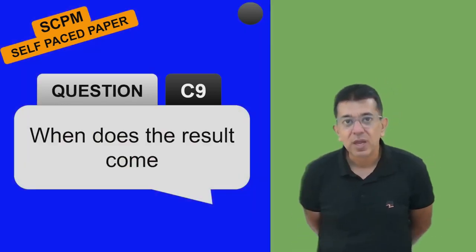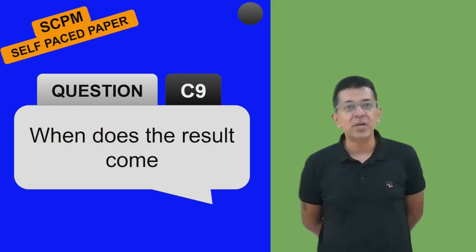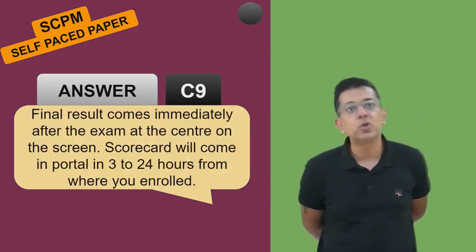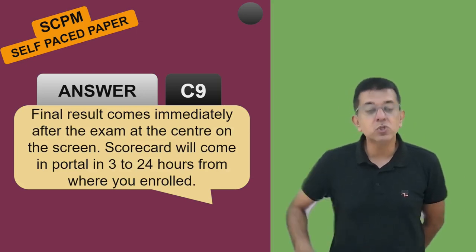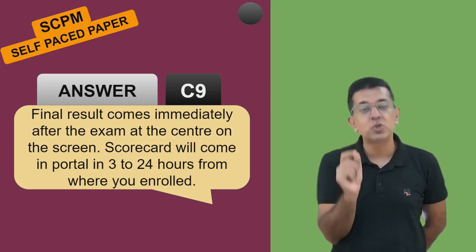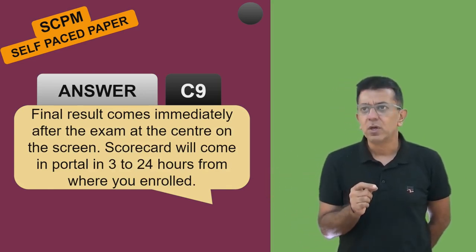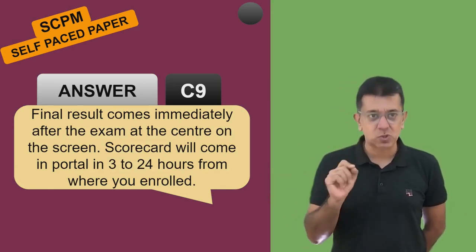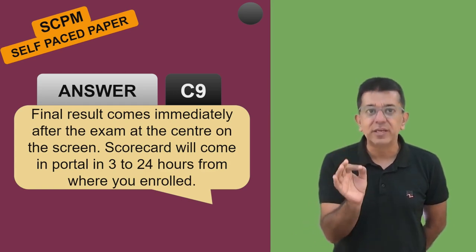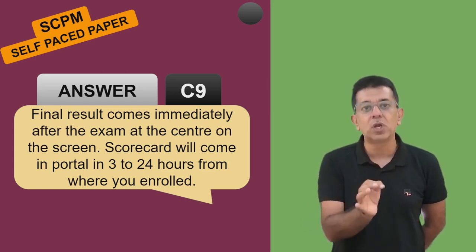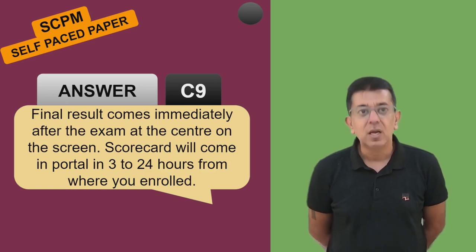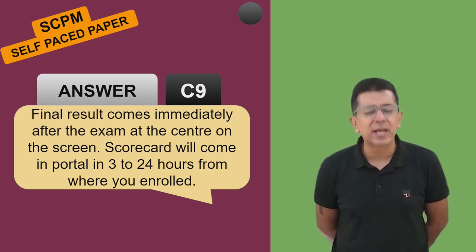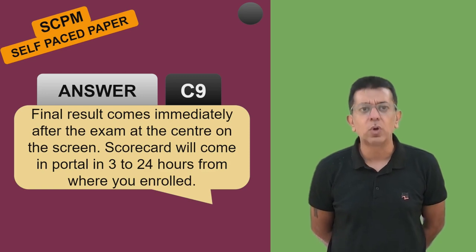When does the result come? The moment you press submit, you will immediately know whether you are passing or not. Your scorecard - how much you have scored, say 75 out of 100 - will come between 3 to 24 hours in the portal where you registered. The exact score honestly doesn't even matter much since it won't appear on your CA Final mark sheet, but how much you scored will be available within 3 to 24 hours.